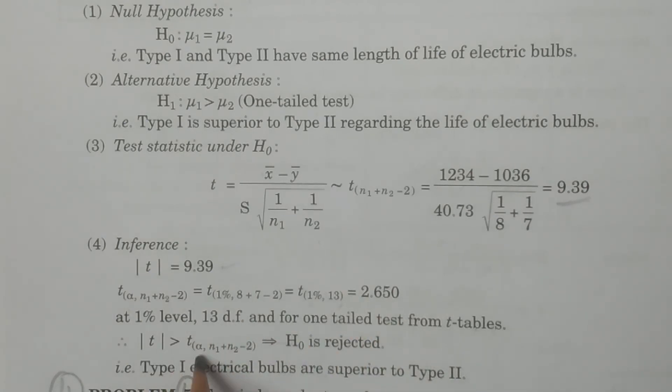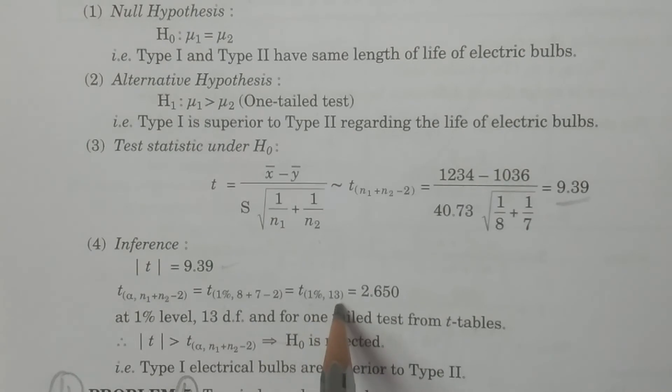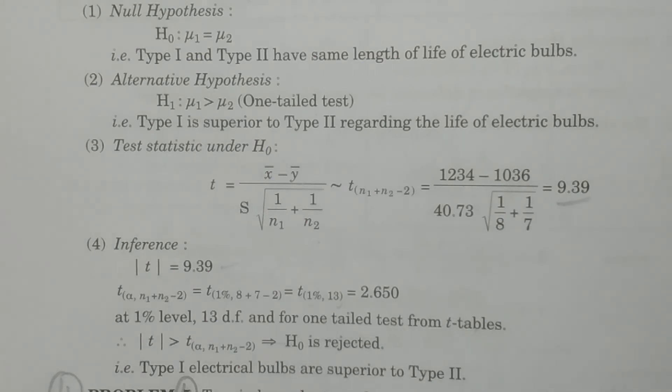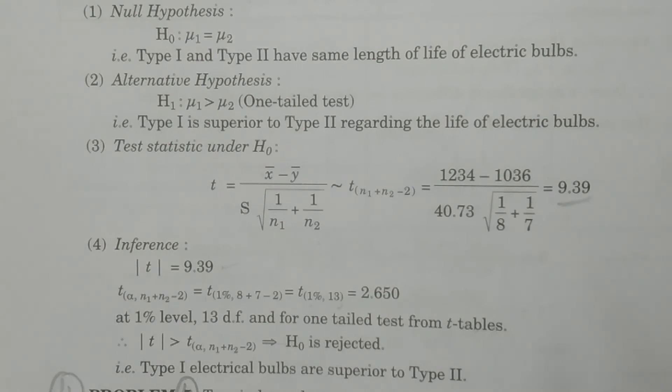that is α, n1 + n2 - 2, that is H₀ is rejected. So therefore, we may accept H₁, that is Type 1 electrical bulbs, which are superior to Type 2 electrical bulbs regarding the length of the life.